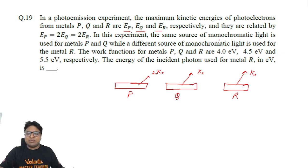In this experiment, same source of monochromatic light is used for P and Q. So for P, we have used one particular frequency, and for Q, we used the same frequency. For R, we used a different frequency. Let's call it as nu prime.